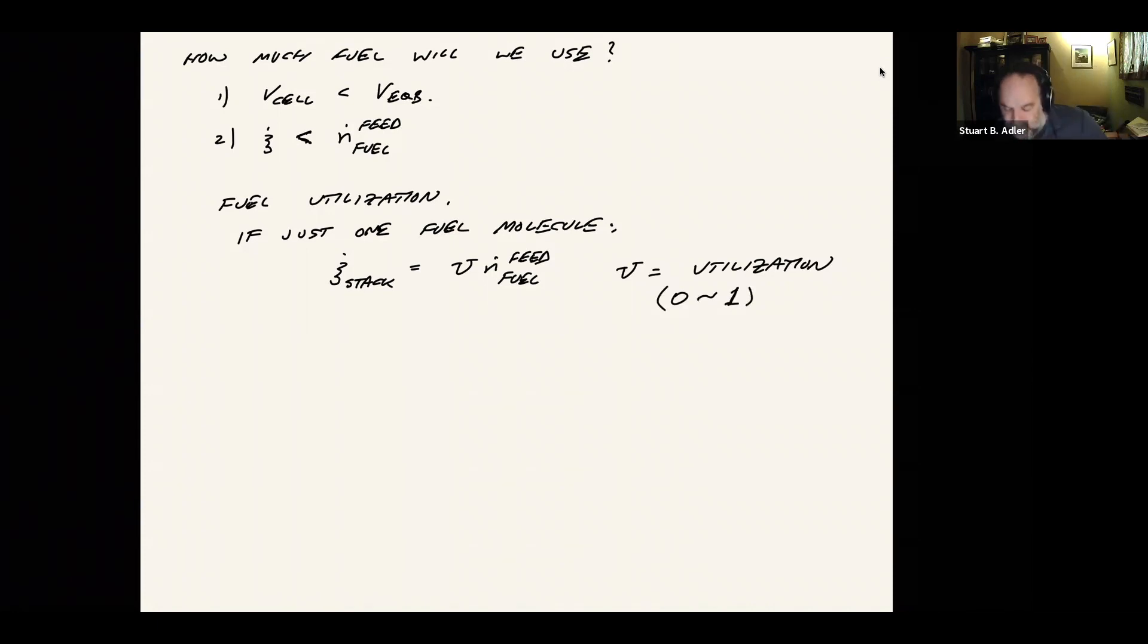1 meaning we use up all the fuel, 0 means we don't use any of it. So the practical implication is that the fuel used by any given cell is equal to the utilization if all the cells are identical times N dot fuel divided by M.